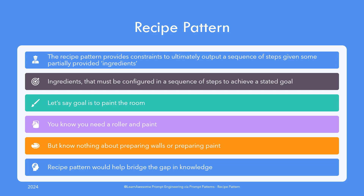The formal definition of recipe pattern goes like: the recipe pattern provides constraints to ultimately output a sequence of steps given some partially provided ingredients that must be configured in a sequence of steps to achieve a stated goal. The textbook definition seems purpose-built to go way above the heads of most of us.